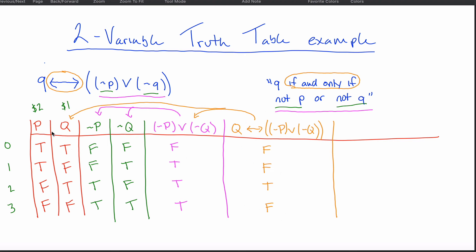The final answer for this truth table is the last column: F, F, T, F. If you wrote your rows in a different order, the values would correspond differently, but as long as all four possibilities are covered it's correct. Most teachers will write them in the standard order — true-true, true-false, false-true, false-false — which is what the one-dollar two-dollar trick helps you get to.